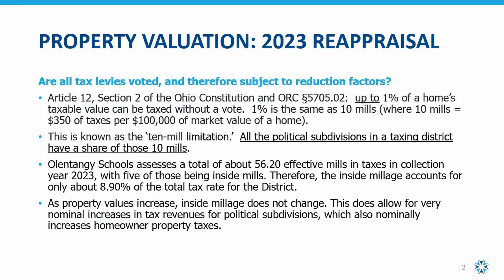This session is focused on the difference between voted and unvoted levies. Article 12, Section 2 of the Ohio Constitution, and Ohio Revised Code 5705.02, explain that up to one percent of a home's taxable value can be taxed without a vote. One percent is the same as 10 mills, which is equivalent to $350 of taxes per $100,000 of market value of a home. This is known as the 10 mill limitation, and all of the political subdivisions in a taxing district have a share of those 10 mills.